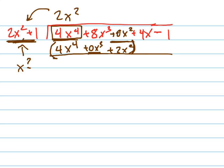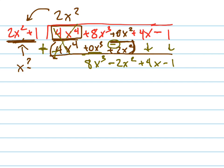Another big mistake people make is forgetting to put parentheses around and distribute that negative in. Let's distribute that negative in. Negative, negative. Add down — that's gone, that was the whole point. This still adds down and becomes 8x cubed. This adds down — remember there's a negative there — so I've got negative 2x squared. Then just bring these ones down straight down: plus 4x minus 1.